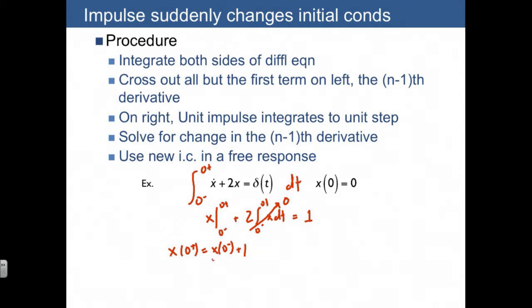We have 0 initial conditions before 0 minus, so this is just 0. So now we know that x(0+) equals 1.